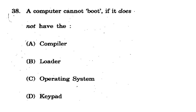Question 38: A computer cannot boot if it does not have what? Options: compiler, loader, operating system, keypad. Compiler, loader, and keypad are all eliminated - none of these alone prevents booting. The computer cannot boot without an operating system. So the correct option is C - operating system.